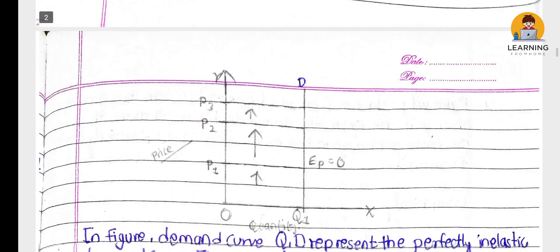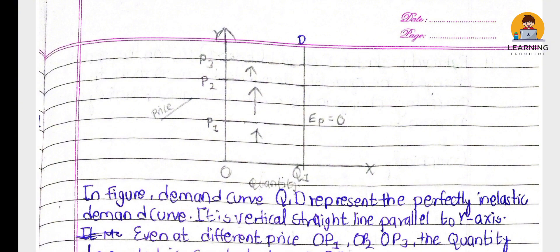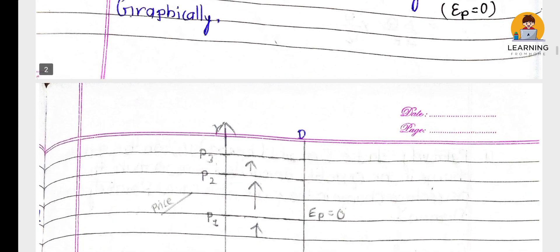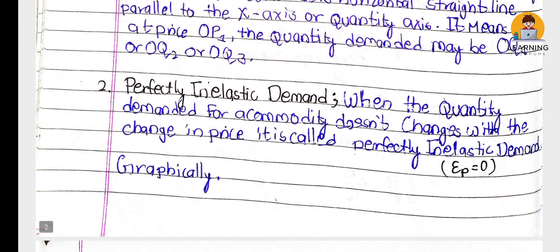Graphically, the x-axis represents quantity demanded and the y-axis represents price. When price changes from OP1 to OP2 to OP3, the quantity demanded remains constant at Q1D. This is perfectly inelastic demand. The definition: when quantity demanded does not change with the change in price, it is perfectly inelastic demand.